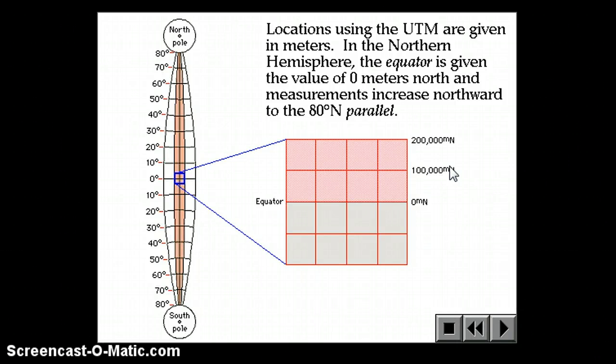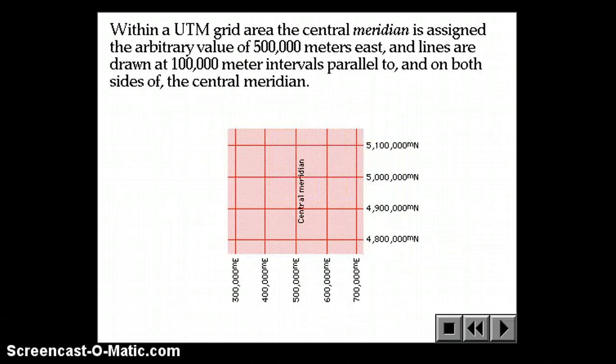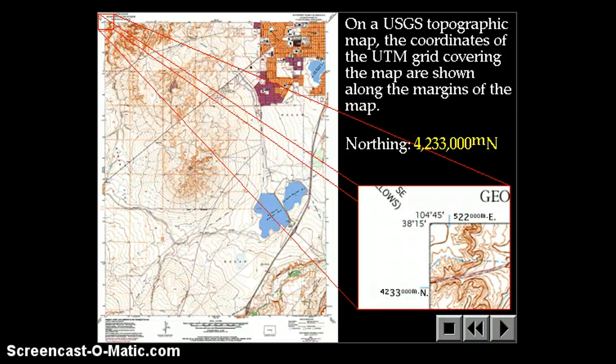They do measure northing and southing and easting and westing, just like many other things have. So we've got a UTM coordinate here telling you how far north, how far east of whatever we've chosen as our baseline.